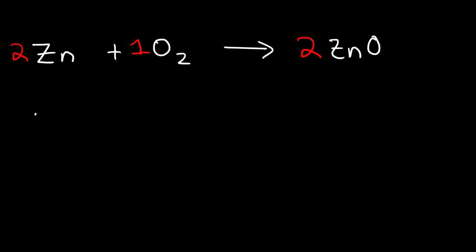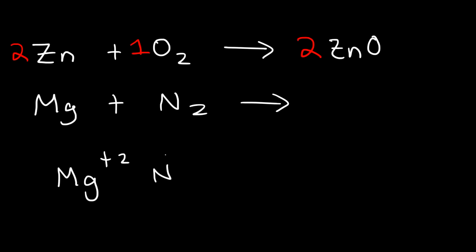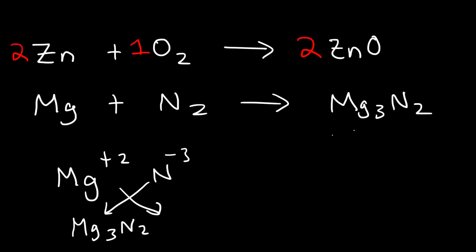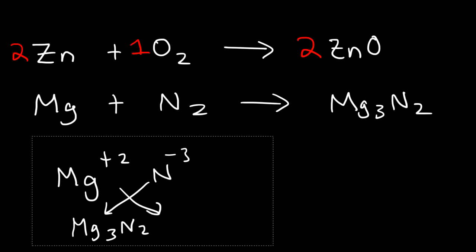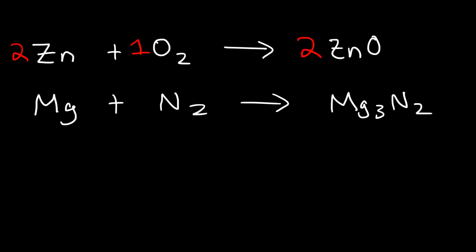If we react magnesium metal with nitrogen gas, we get a compound composed of magnesium and nitrogen — magnesium nitride. Magnesium has a +2 charge and nitride has a -3 charge, so the chemical formula is Mg₃N₂. To balance the reaction, we need a three in front of Mg and a one in front of N₂.